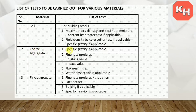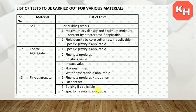For Coarse Aggregate: Specific Gravity, Fineness Modulus, Crushing Value, Impact Value, Flakiness Index, and Water Absorption. For Fine Aggregate: Fineness Modulus or Gradation, Silt Content, Bulking, and Specific Gravity. For both Coarse Aggregate and Fine Aggregate, Sieve Analysis is necessary and is done during testing.